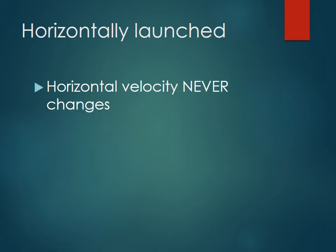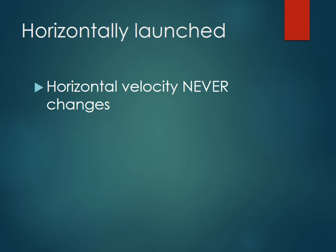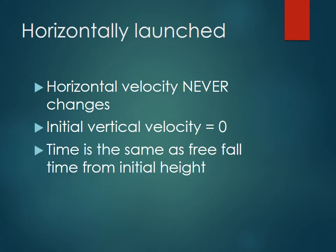So if it's horizontally launched, the horizontal velocity never changes. Its initial vertical velocity equals zero. So if it says it's horizontally launched with some velocity, that is its horizontal velocity the whole time. The time it takes to hit the ground is the same as the free fall time from that initial height.